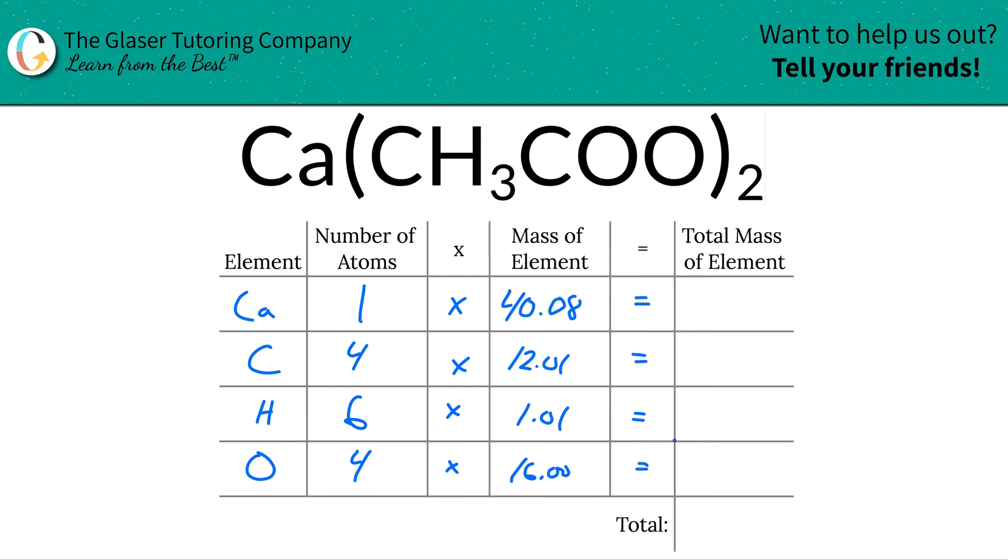To find the total mass of each element in the compound, we're simply going to multiply this row across. The total mass of calcium is 40.08 because there's one atom of calcium. For carbon, there's four atoms and each has a mass of 12.01, which gives 48.04. Then six hydrogens gives a total mass of 6.06, and for oxygen we have 64.